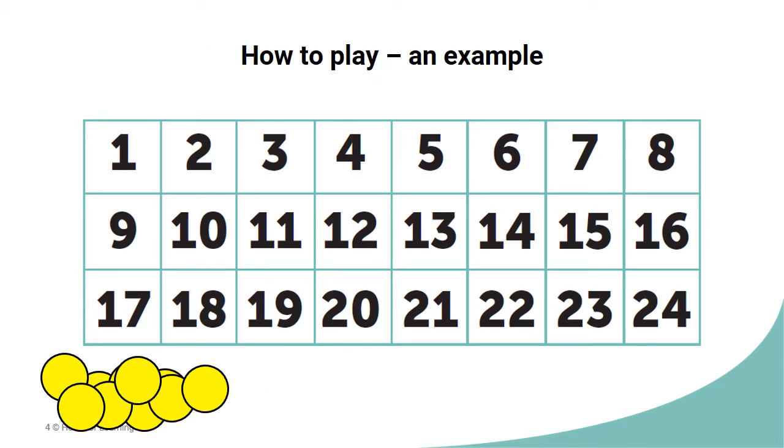Let's say that we start on the number 12. The next number that we choose must be either a factor or a multiple of the number 12. So we could place a counter on 24 as this is the second multiple of 12.